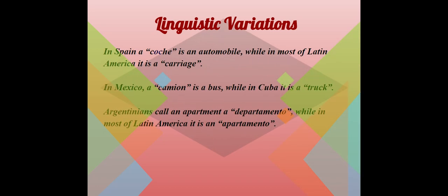It is also important to note that there are linguistic variations in Latin America. For example, in Spain a coche is an automobile, while in most of Latin America it is a carriage. In Mexico, a camión is a bus, while in Cuba it is a truck. Argentinians call an apartment a departamento, while in most of Latin America it is an apartamento. Spanish is also the second most spoken language in the United States.